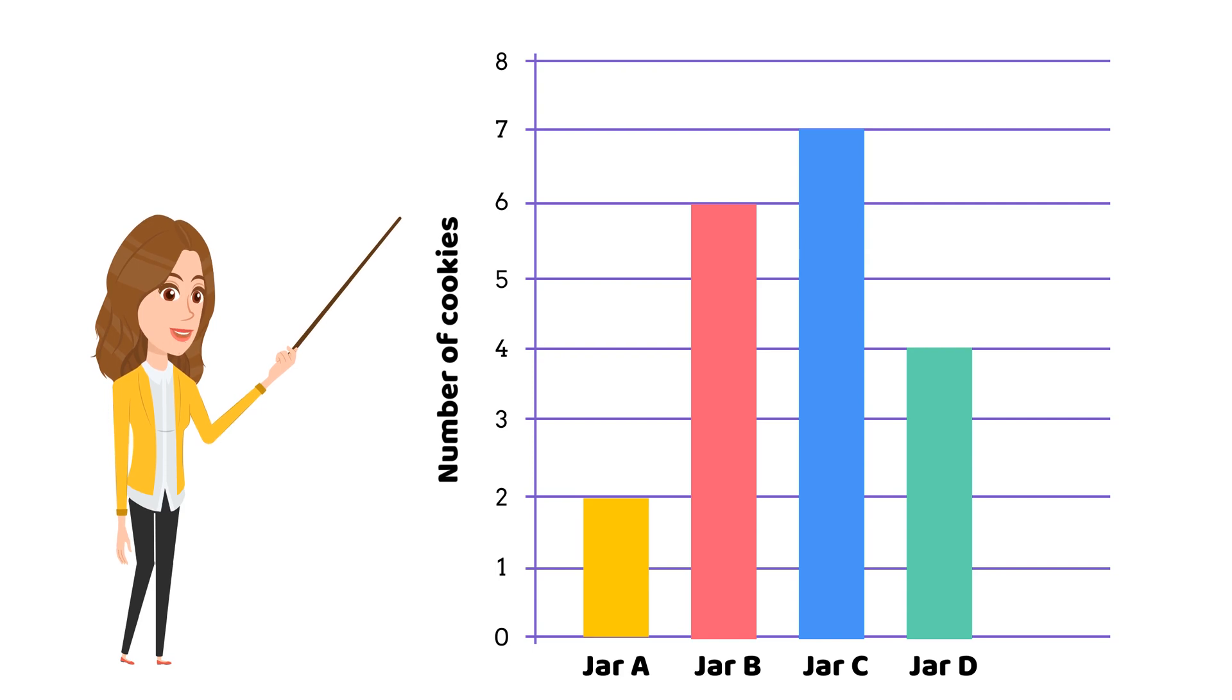Look at our completed bar graph. The height of each bar shows us how many cookies each jar has. For example, this tall bar represents Jar C, which has seven cookies.